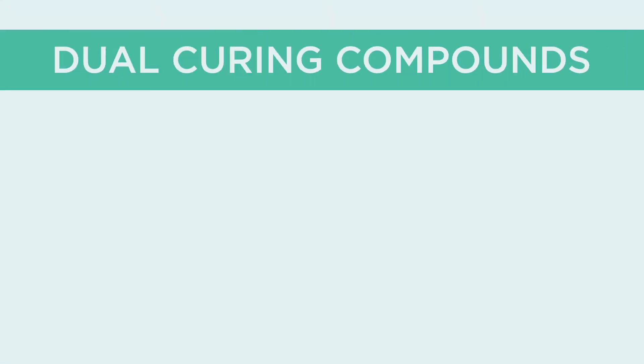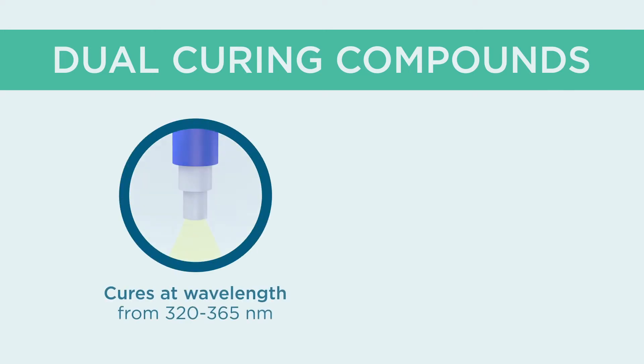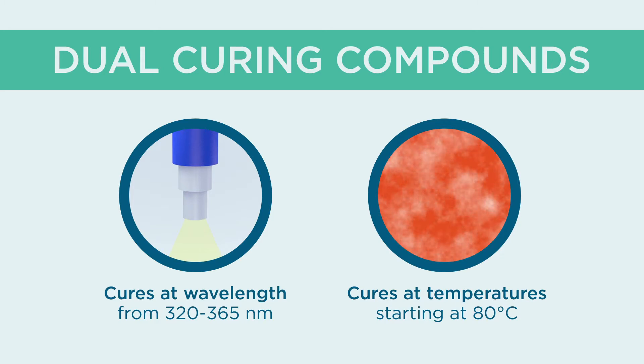Dual curing compounds offer an initial cure using UV light along with a secondary heat curing mechanism for concealed or shadowed out areas.